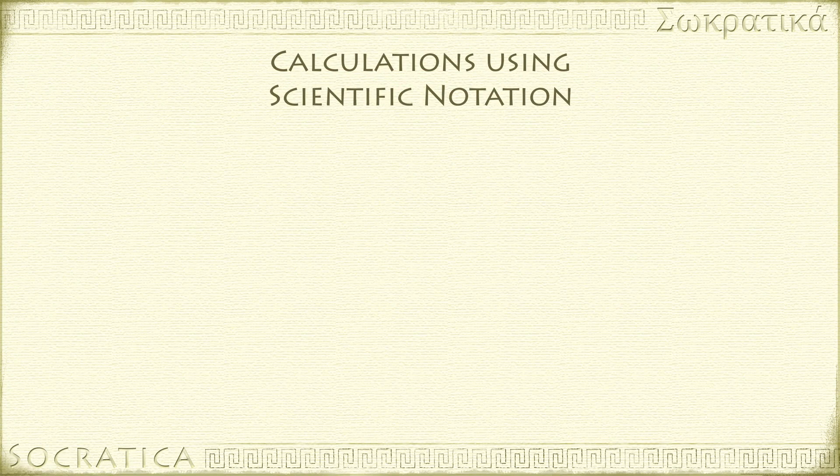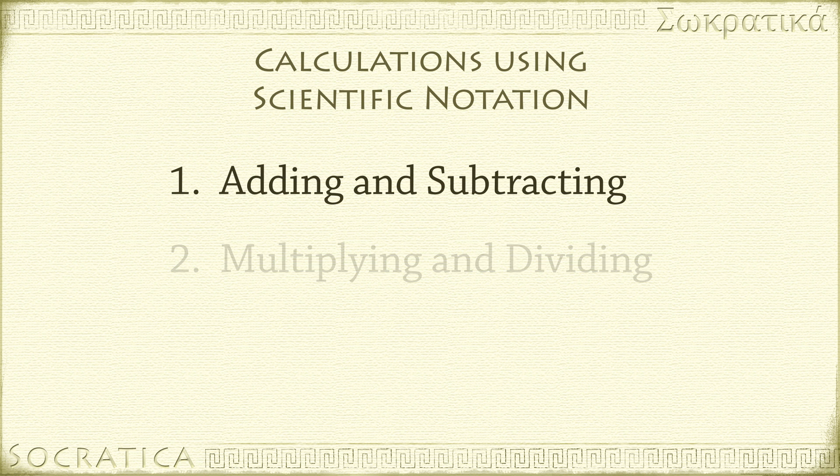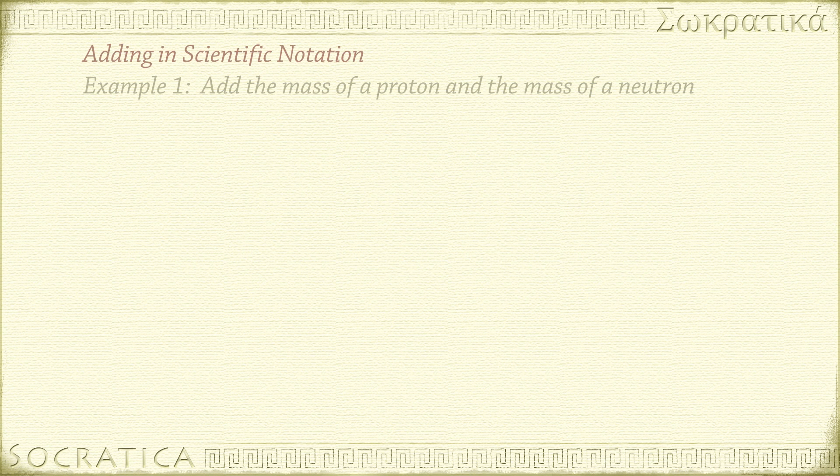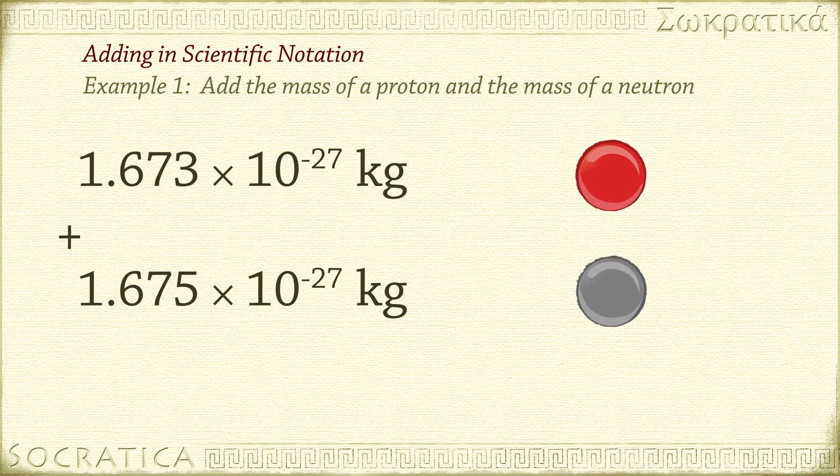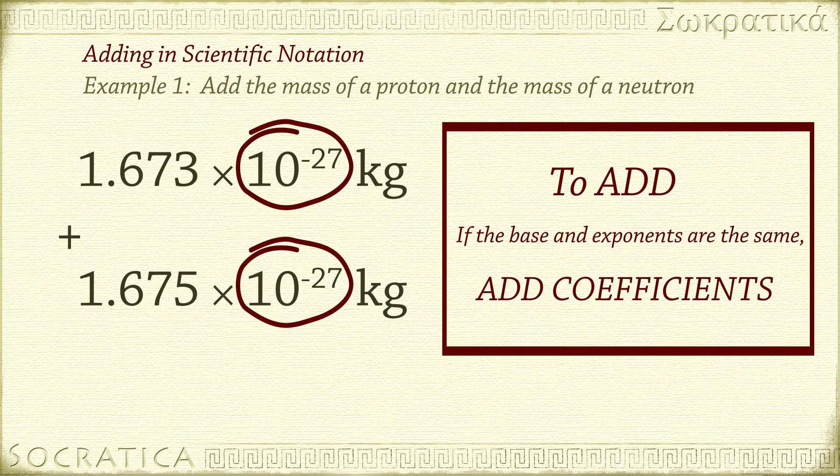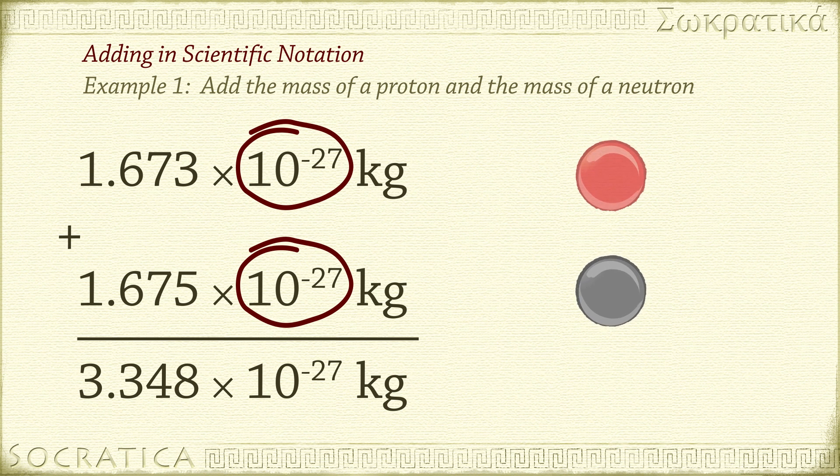Now let's turn to calculations using scientific notation. First, we'll look at the rules for adding and subtracting, and then we'll look at examples for multiplying and dividing. Add the mass of a proton and the mass of a neutron: 1.673 times 10 to the negative 27 kilograms plus 1.675 times 10 to the negative 27 kilograms. These numbers have the same base and exponent, so all we need to do is add together the coefficients. So we get 3.348 times 10 to the negative 27 kilograms. The coefficient is still between 1 and 10, so there's no need to change the exponent on the right.